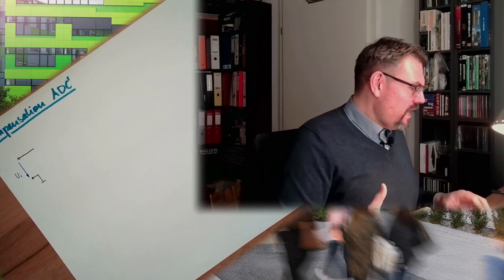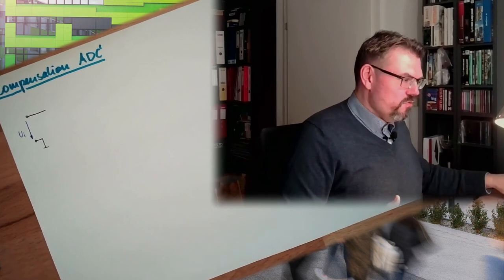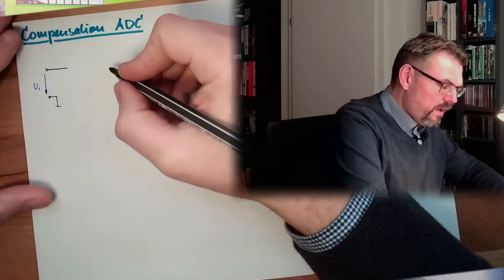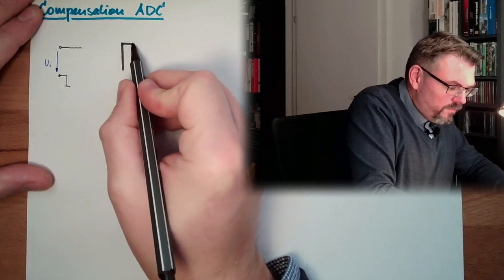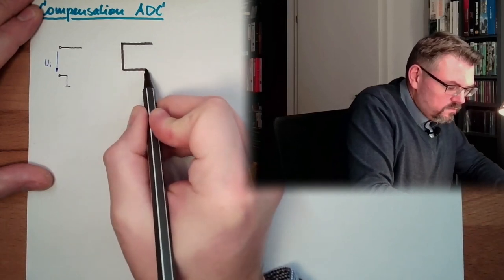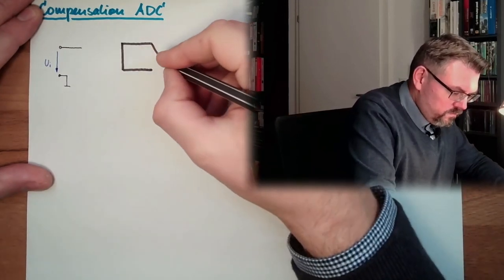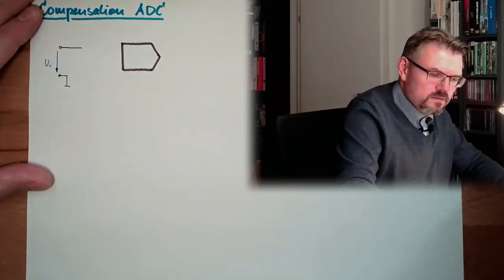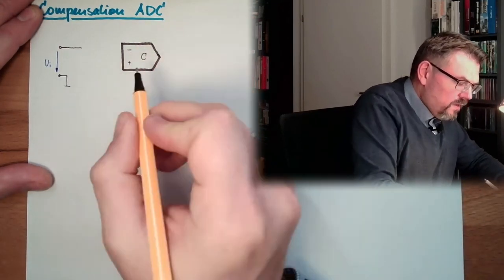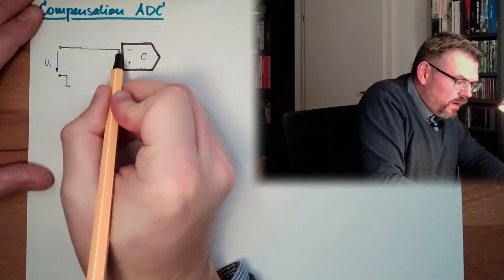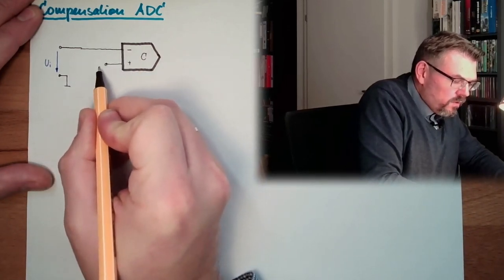And well, this time we are directly comparing Ui with another voltage. So we have a comparator. Meanwhile, we know what a comparator is. Minus, plus, here is the comparator. So we are comparing this Ui to another voltage.